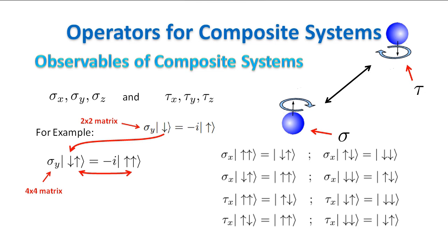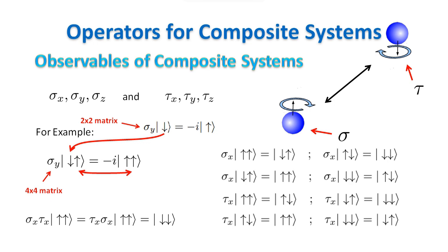We are now able to work out how our operators act on each single basis vector of the composite state. We are also able to work out the operator for a measurement involving two different operators acting on the two particles, by applying both operators to a vector basis. Note that we can act with sigma and tau in any order because the two operators acting on different parts of a system commute, as you can easily check.